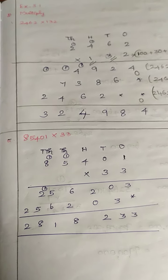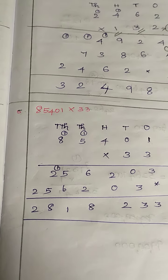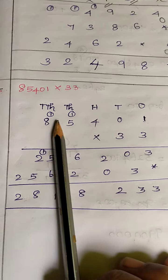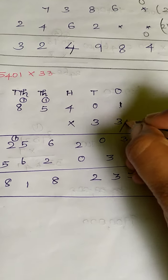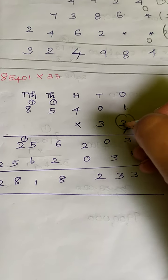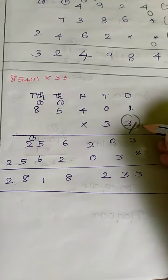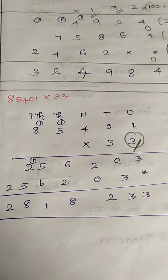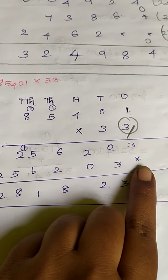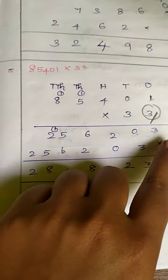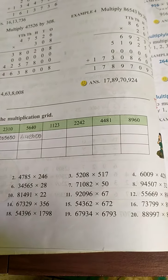This is how we have done the multiplication. I have also done the 5th problem: 85,401 multiplied by 33. This is a 5-digit number, so your place value chart goes up to 10,000. This number is multiplied by 33. You begin with the 1s digit, which is 3: 3 into 1 is 3; any number multiplied by 0 is 0; 4 threes are 12, carry over 1; 5 threes are 15, plus 1 is 16, carry over 1; 6 threes are 18, plus 1; 8 threes are 24, plus 1 is 25. Since both digits of 33 are the same, multiplying again by 3 gives the same partial product. Place 0 in the 1s position and write the same number again, then add. This is an easy model multiplication — if you practice, you will get it. The remaining problems are your homework.